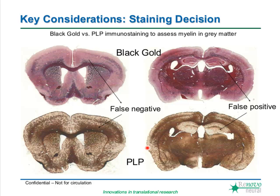Once tissue is fixed and sectioned, the next consideration is choosing the best staining to answer your question. Histological stains such as H&E, silver stain, and crystal violet provide a lot of information about tissue health. However, when asking questions about what's happening specifically in disease, antibody stains can pick up where histological stains end. Comparing two adjacent sections — one stained with black gold and the other immunostained with PLP developed with DAB — reveals areas of false negative and false positive staining, illustrating the importance of understanding the specific limitations of your stains.